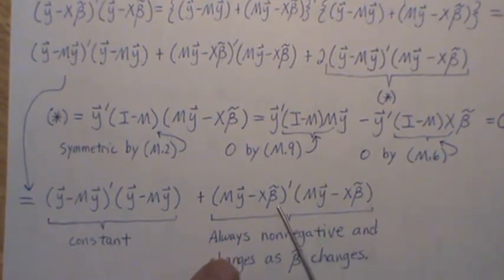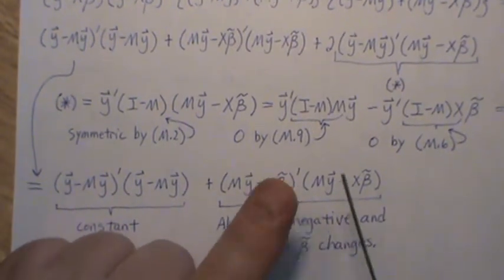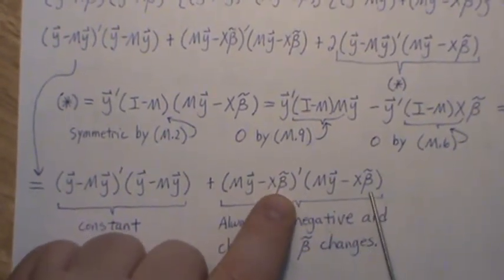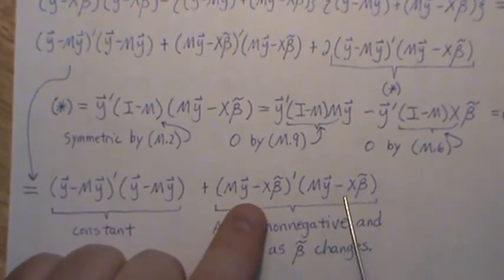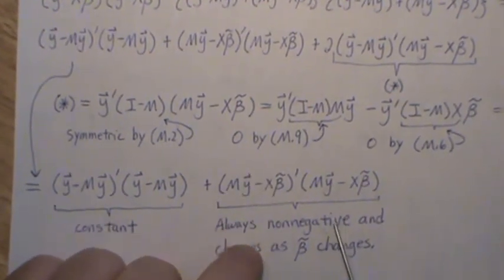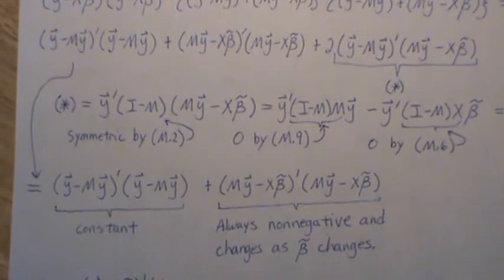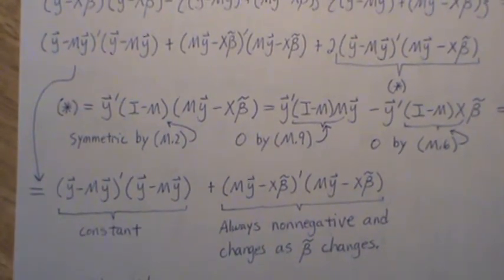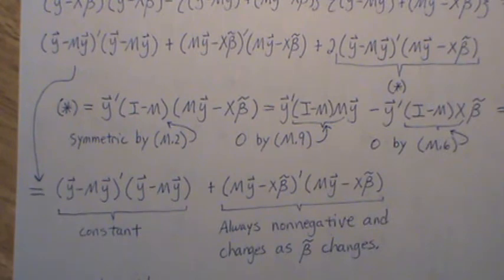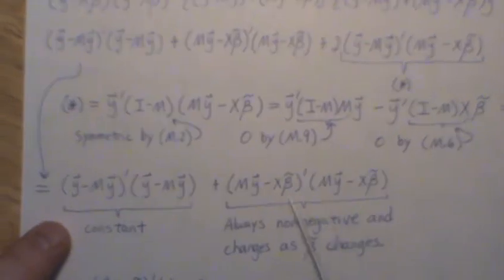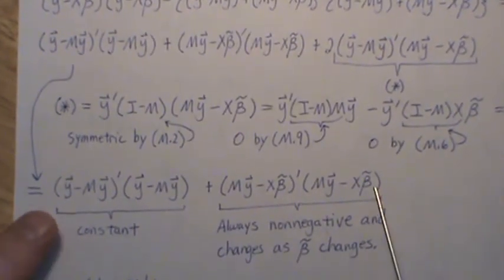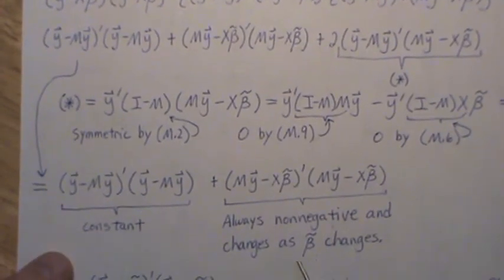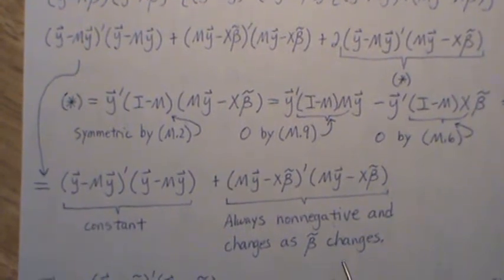But over here, there is a beta tilde. So this gets smaller and bigger, depending upon what beta tilde we have. But notice that this is the same as this. So when you take that vector product, it's the sum of squared things. So this piece here has to be non-negative. It's zero or positive, non-negative. And for whatever value we pick for beta tilde, it's non-negative. So it changes as beta tilde changes.